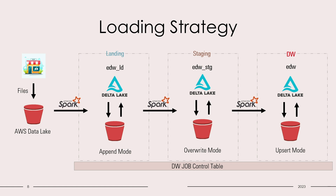The staging will only read the incremental data from the landing layer and will write in the staging tables as overwrite mode. The DW table will read the data from the staging layer and will insert or update the data as per the requirement. The whole system is supported by a job control table which will help log execution of each pipeline status and will also help achieve both incremental and full load scenarios in the same flow.